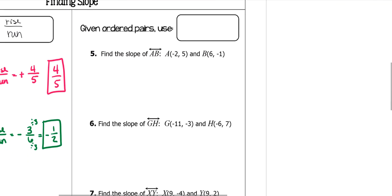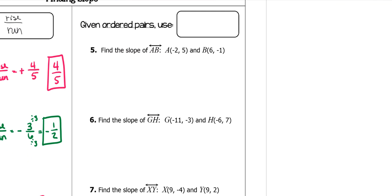If you're given ordered pairs, we have to use an equation. Which means that you subtract your y's over your x's. So you label all of these.